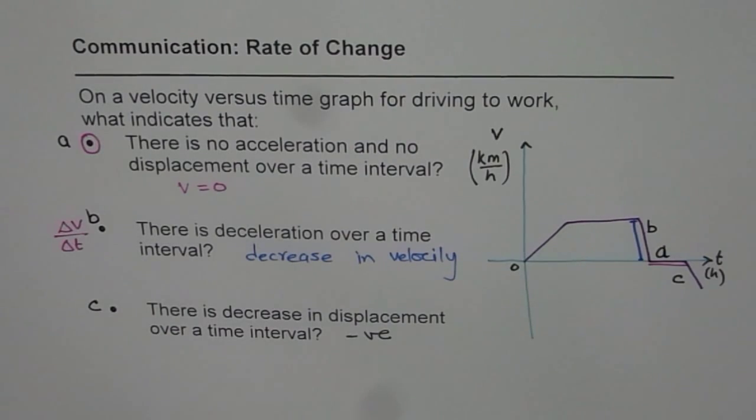So that is how we can explain, with the help of a velocity time graph, different intervals where acceleration is zero and displacement is also zero, or where there is de-acceleration, or where there is decreasing distance or decreasing displacement. I hope that helps. Thank you, and all the best.